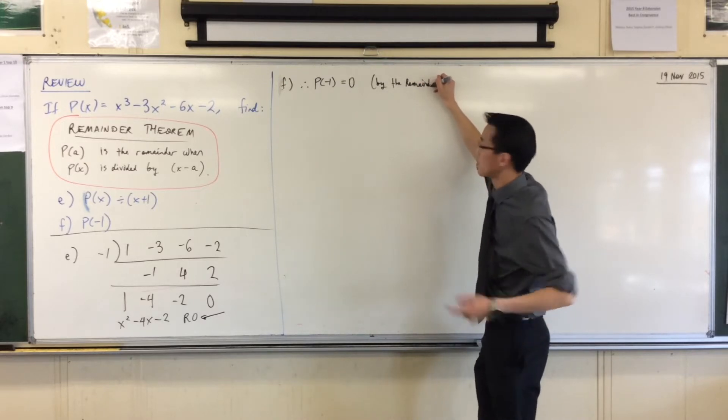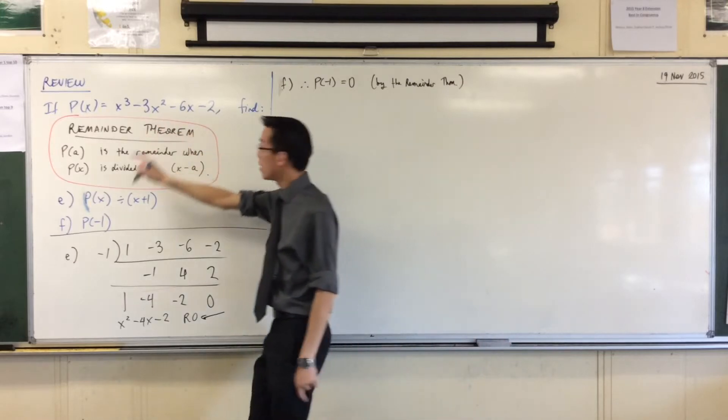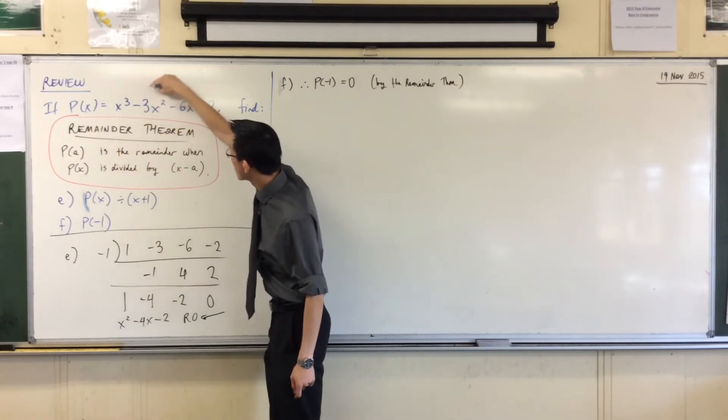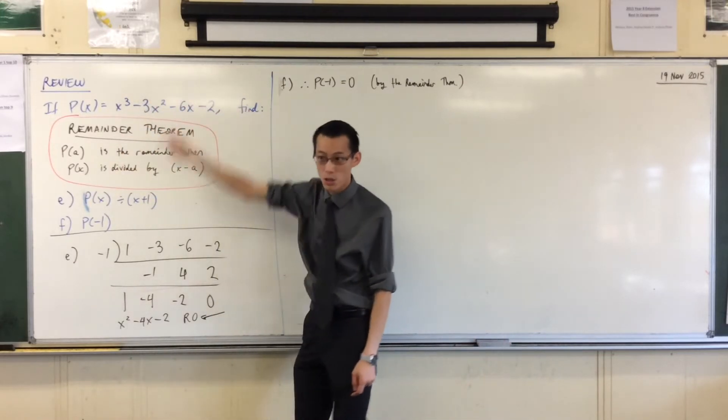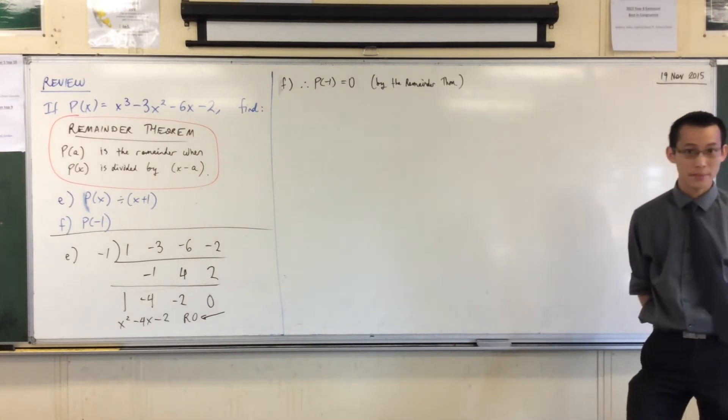Of course there's no reason why you can't just substitute it in. When you put in negative 1 here you're going to get -1 - 3 + 6 - 2, you're still going to get 0.